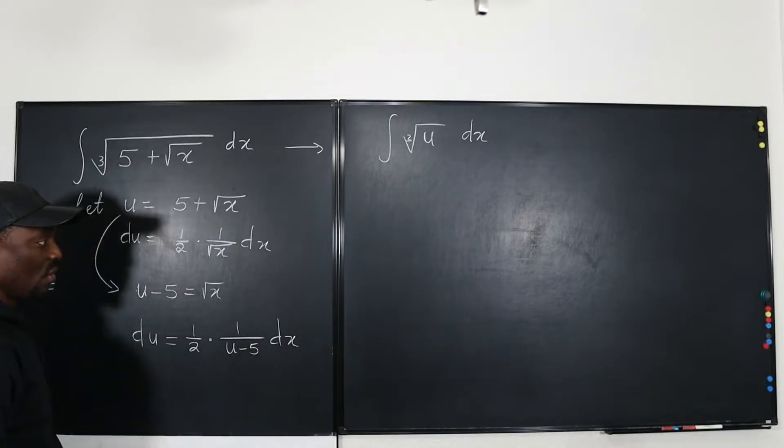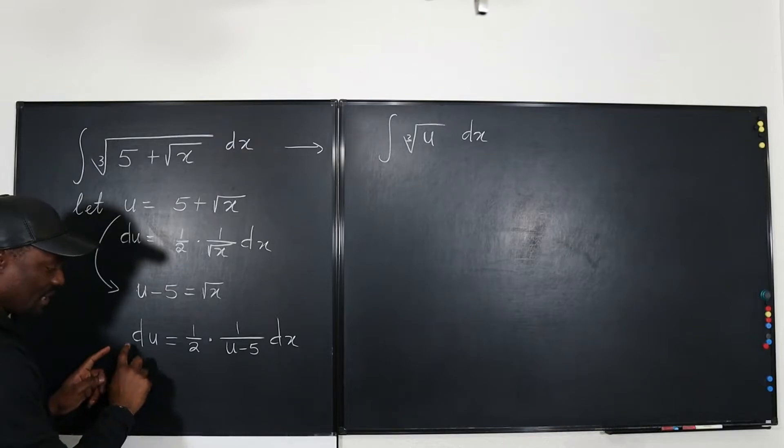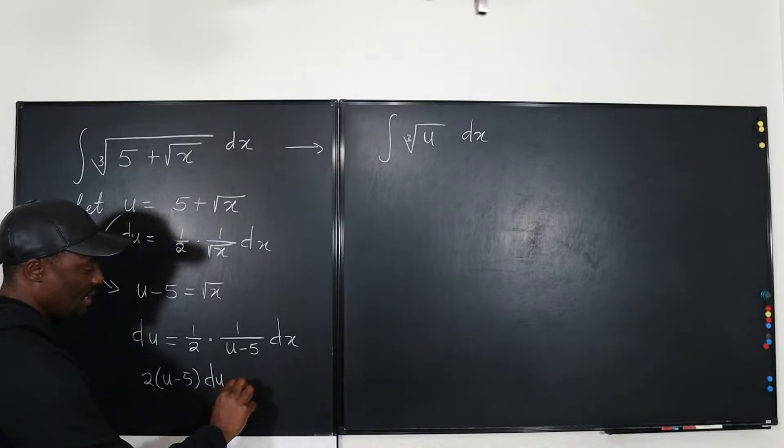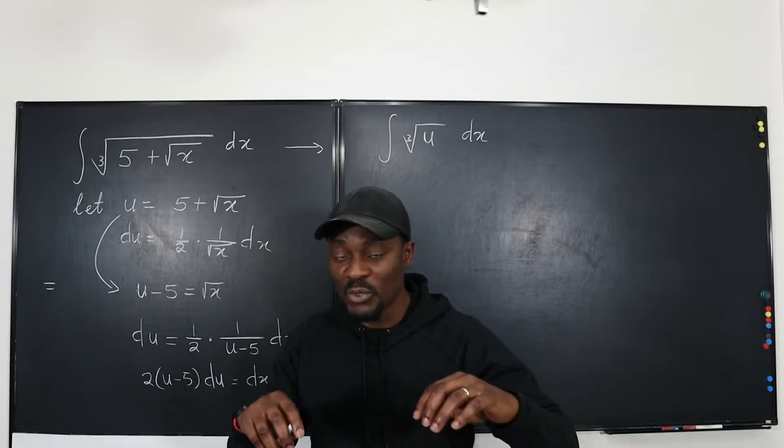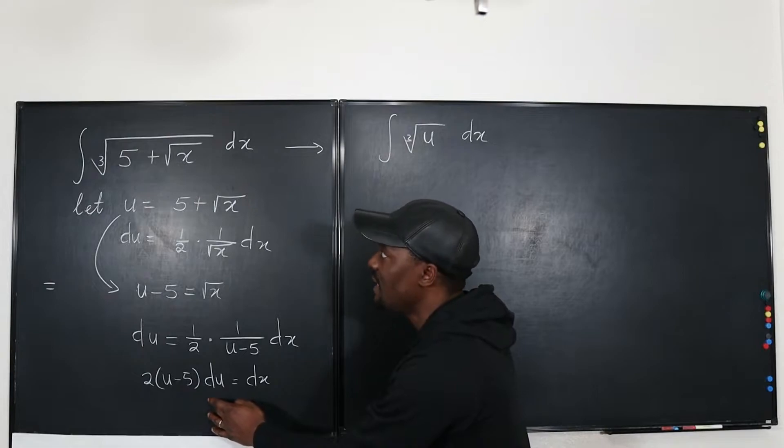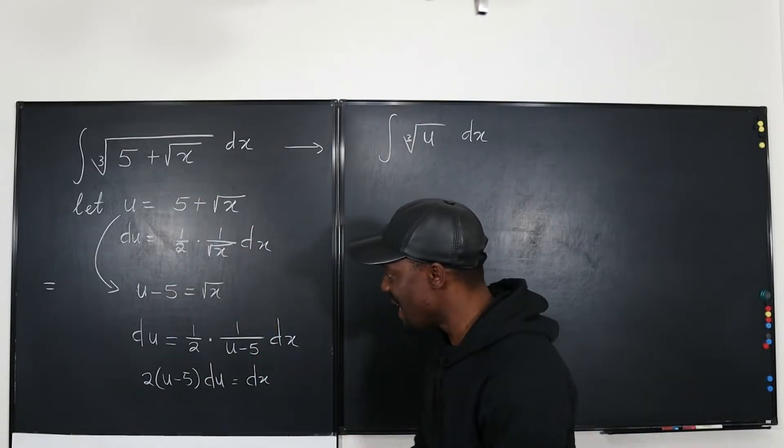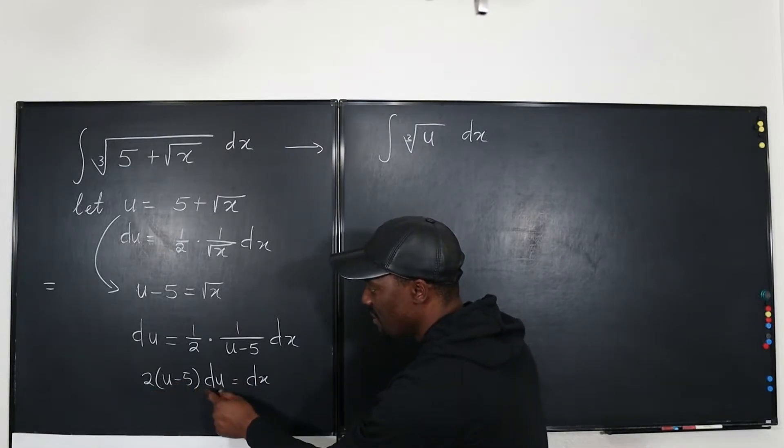So that means we have dx here. So we can go here and say that if you multiply this and bring it to the side, you're going to have 2 times u minus 5 du is equal to dx. Whoa, now we're able - there's no square root function. We're able to find something that's linear and linear functions are easy to multiply or even integrate. And now we're going to replace dx with 2 times u minus 5 du.